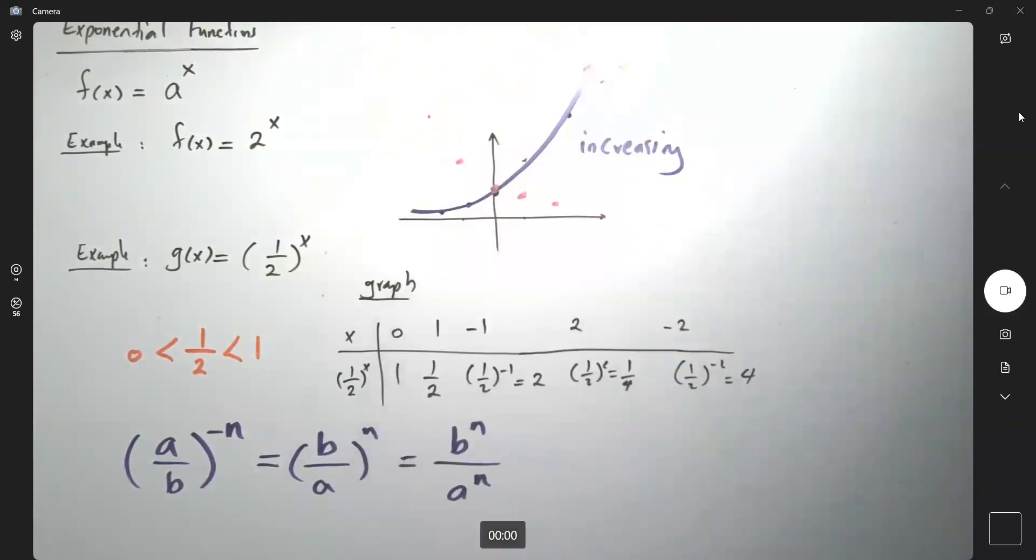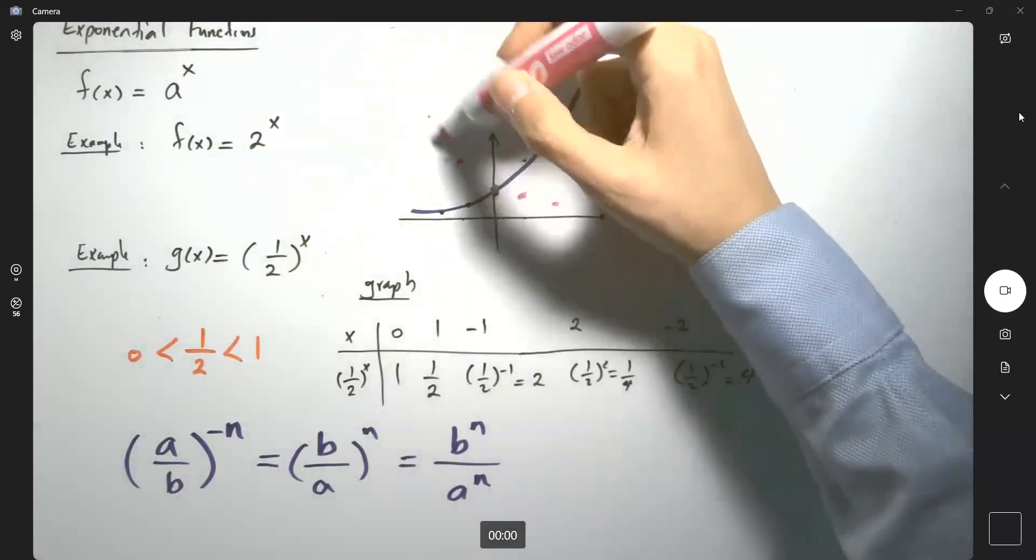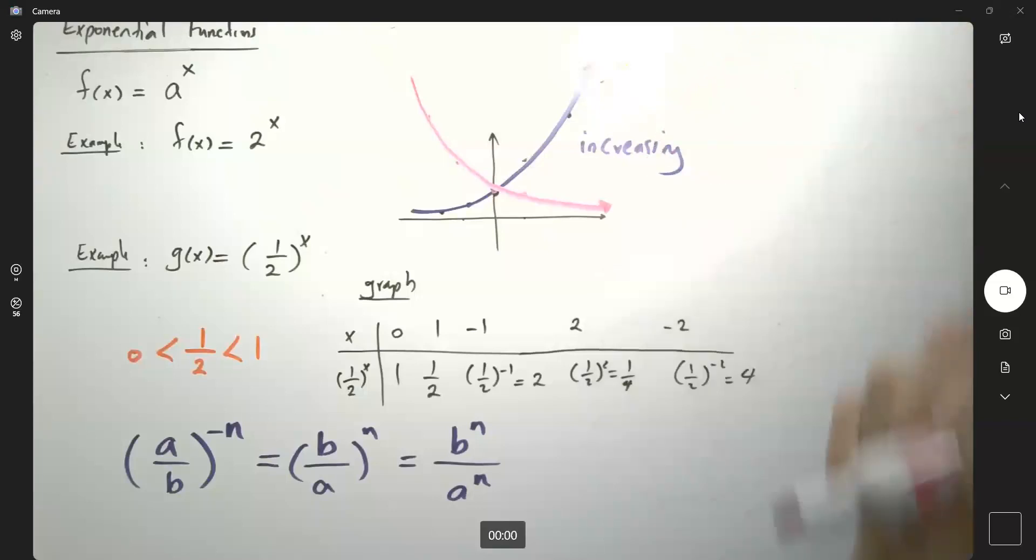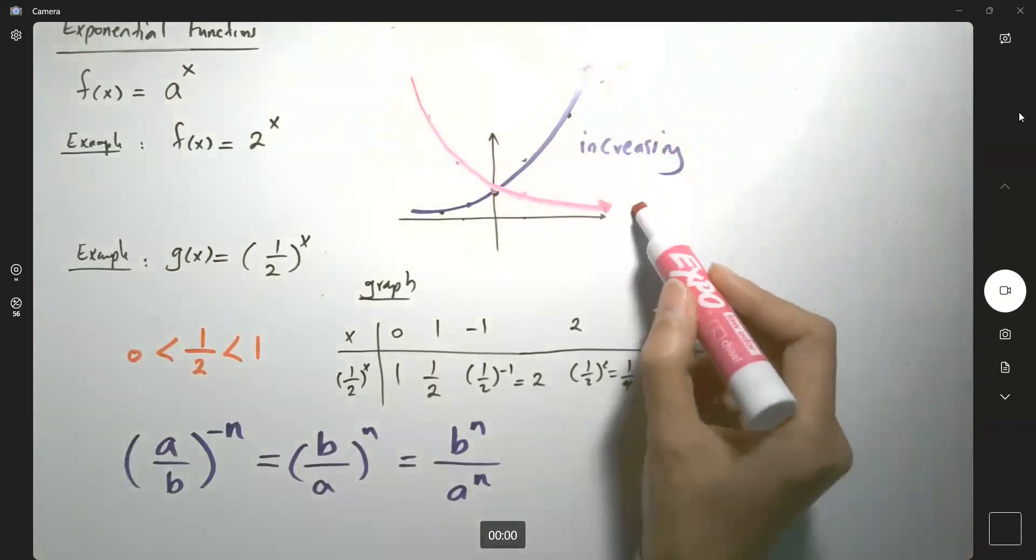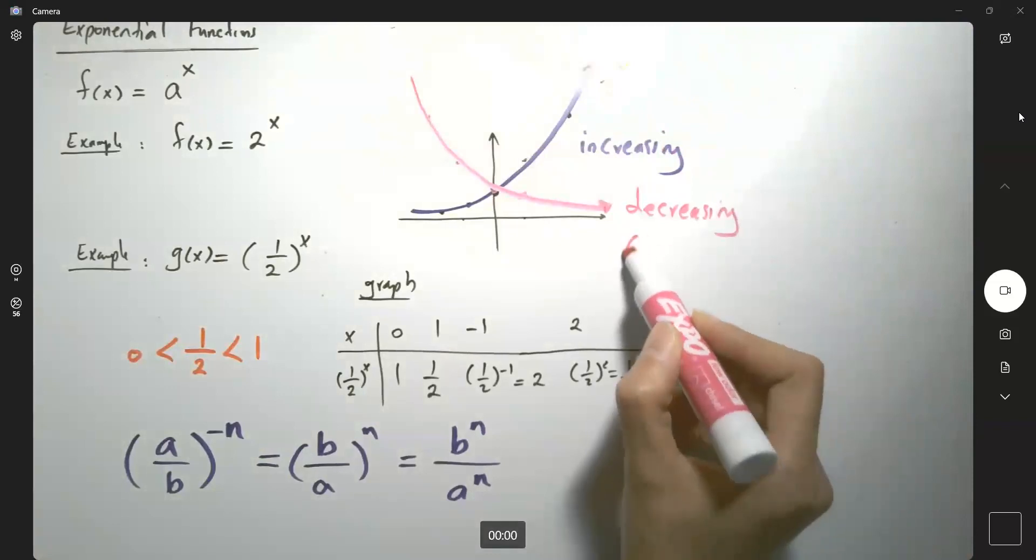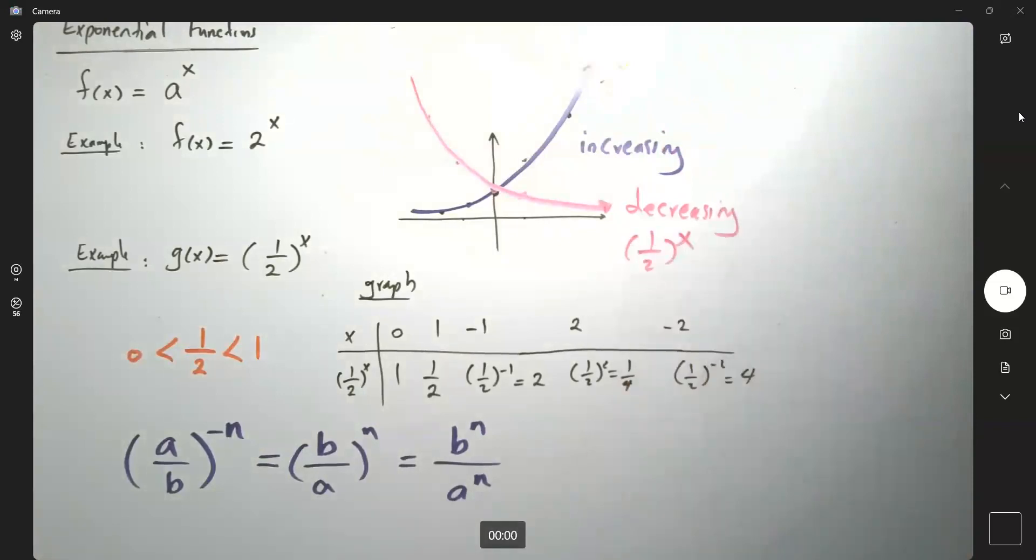So it's going to go up. So if I connect these dots, you have a decreasing function. This guy is (1/2)^x.